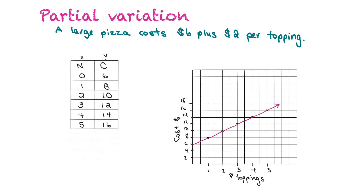Is this relationship linear or nonlinear? It's linear because all the points line up nicely. It passes through the y-axis at (0, 6) — not through the origin. Our next question is to write an equation to find the cost C of a large pizza with n toppings.